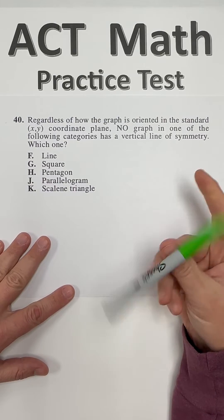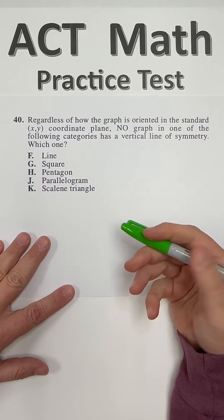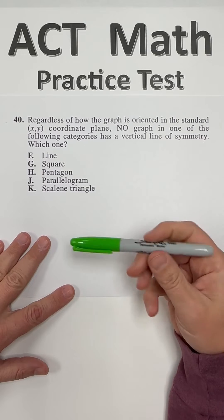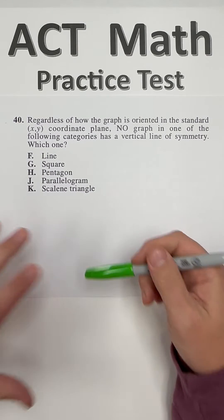Regardless of how the graph is oriented in the standard coordinate plane, no graph in one of the following categories has a vertical line of symmetry, which one?